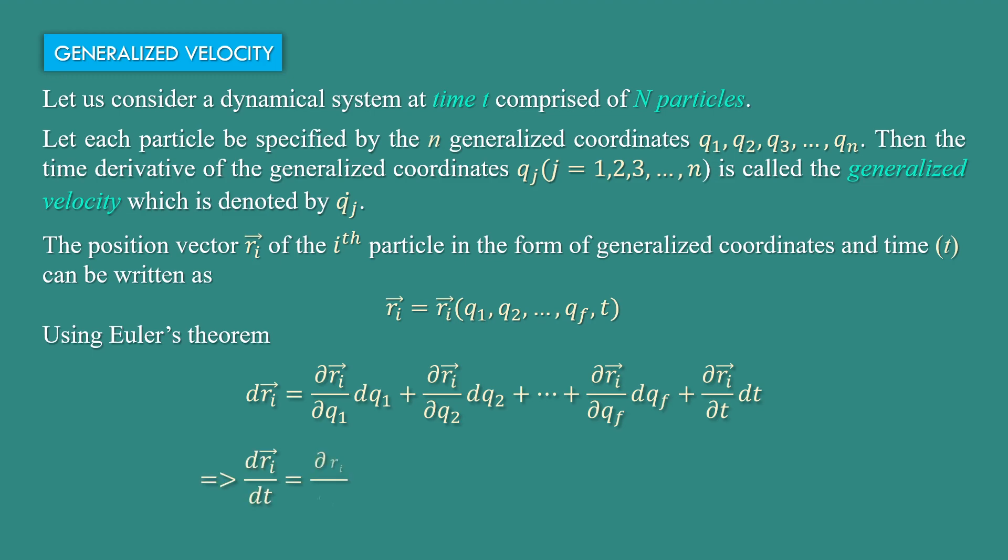Dividing both sides by dt, we get d ri by dt equal to del ri by del q1 into dq1 by dt plus del ri by del q2 into dq2 by dt plus up to del ri by del qf into dqf by dt plus del ri by del t into dt by dt.